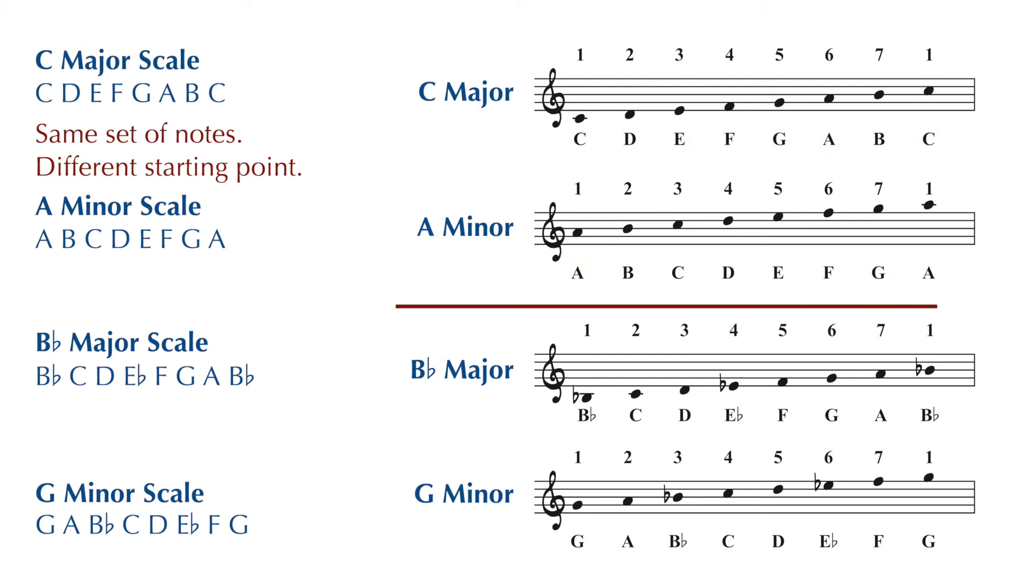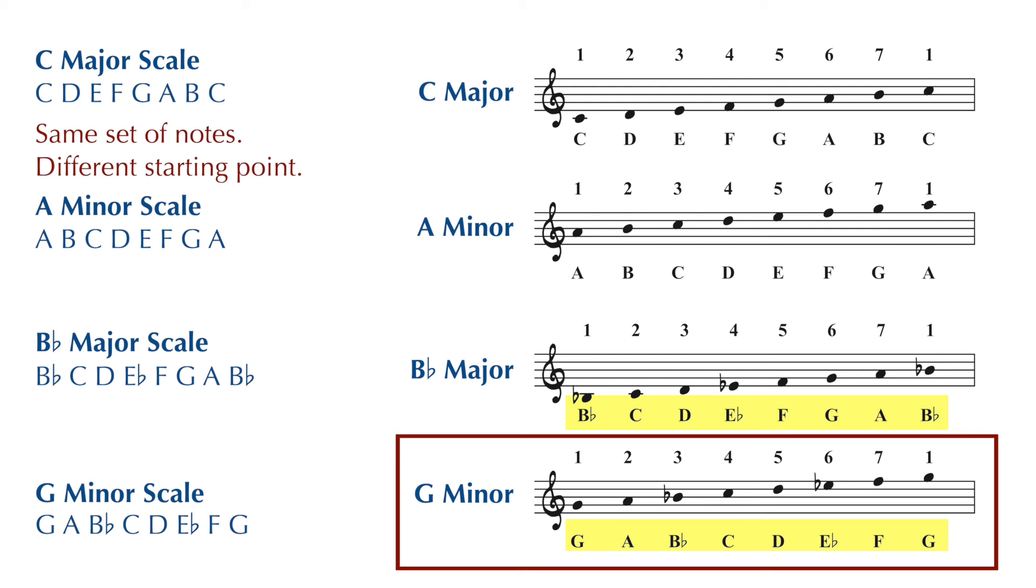Instead of C, here's a B flat major scale: B flat, C, D, E flat, F, G, A, and B flat. And a G minor scale: G, A, B flat, C, D, E flat, F, and G.